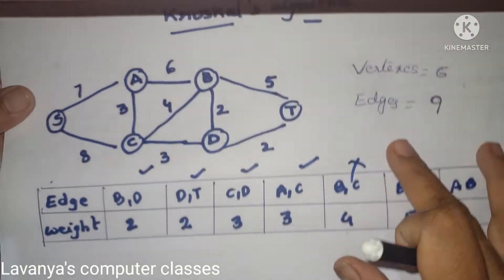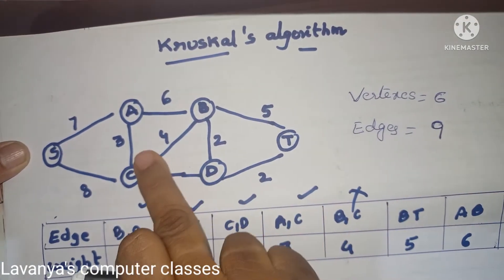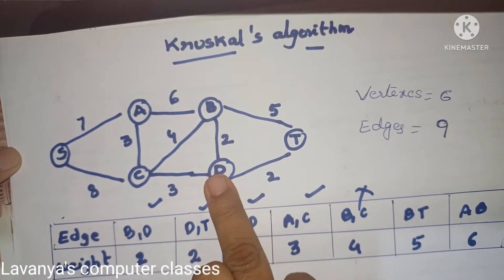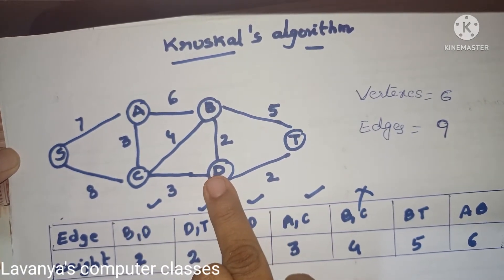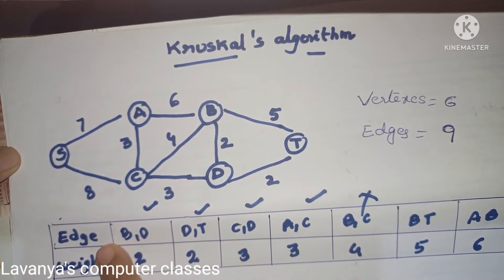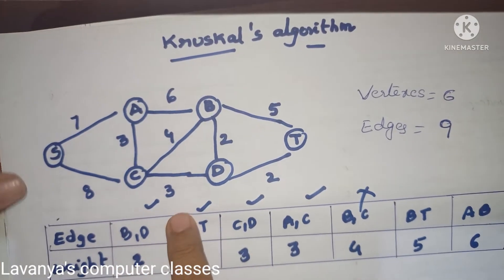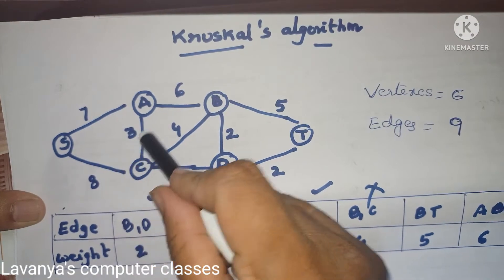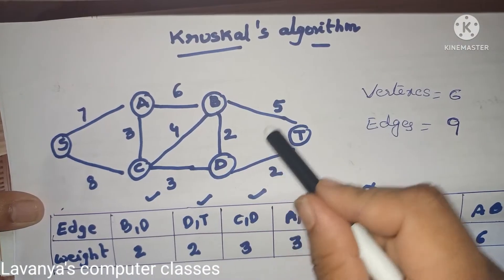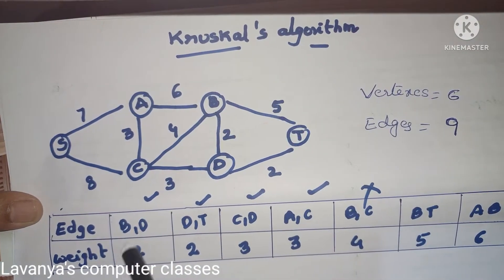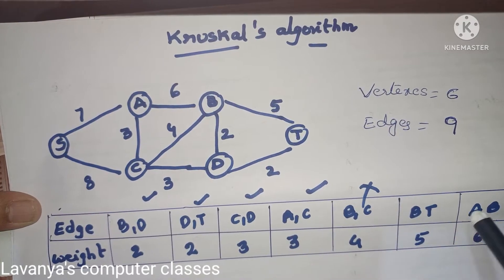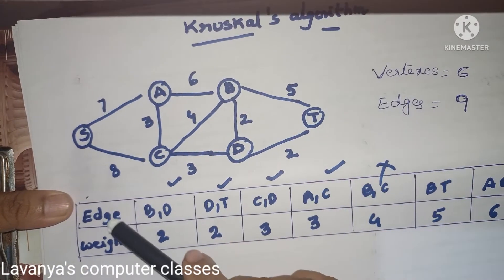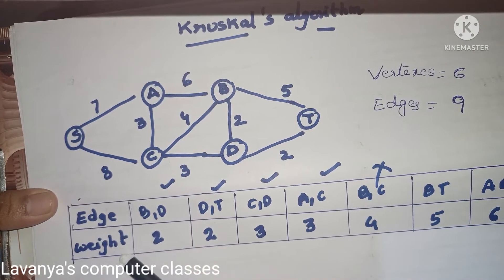So this is the Kruskal's algorithm example. First, we take a graph and draw a table with all edges and their weights — minimum edge first. There are 9 edges in total: 1, 2, 3, 4, 5, 6, 7, 8, 9. We prepare a table with columns 'edge' and 'weight'.